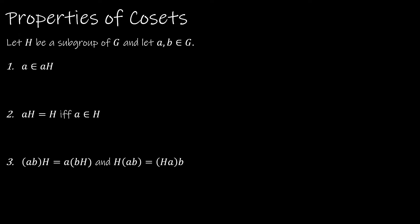Now let's look at coset properties. For each of the nine properties, H is a subgroup of G and A, B are elements of G. Property 1: A is an element of AH. This makes sense because H is a subgroup, so the identity E is in H, and A times E equals A, so A is always in its own left coset AH.